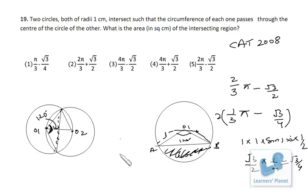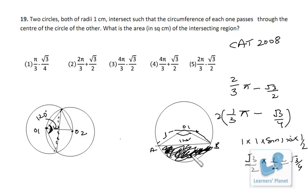The two key concepts used here are: first, the sine formula to find the area of a triangle; and second, how to find the area of a segment. The shaded region is a segment, and its area equals the area of the sector minus the area of the triangle. Doubling this segment area gives the area of the intersecting region.